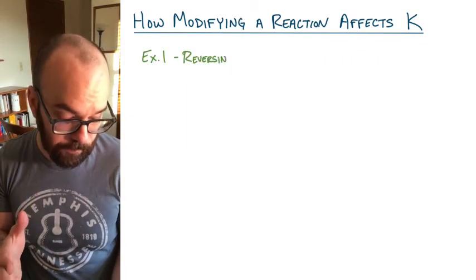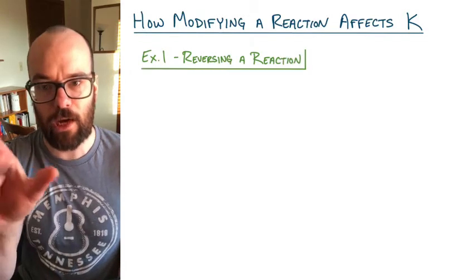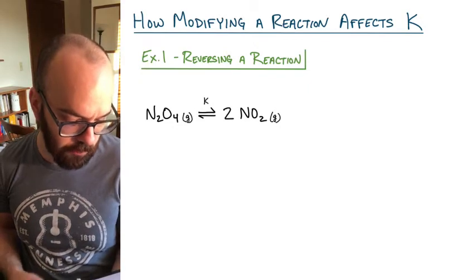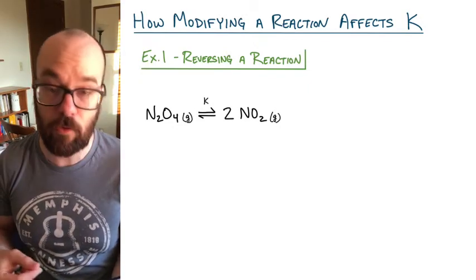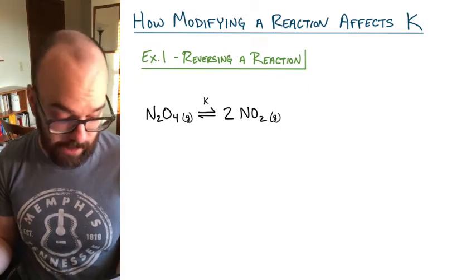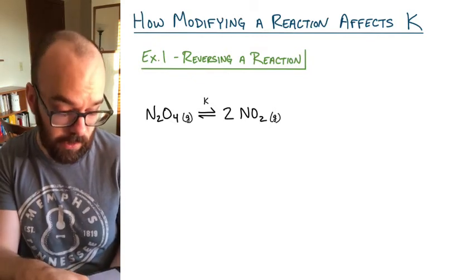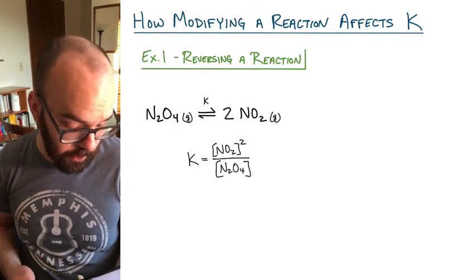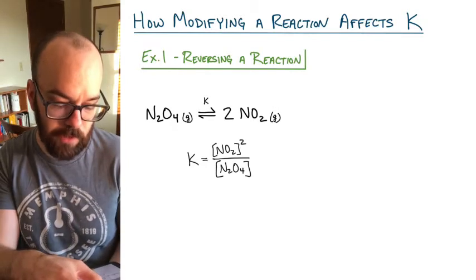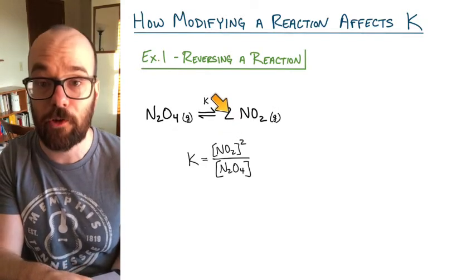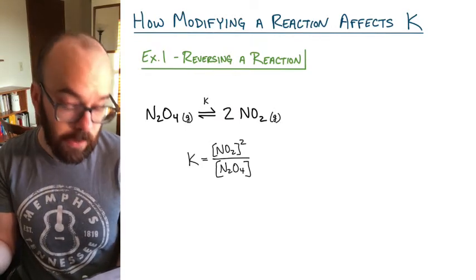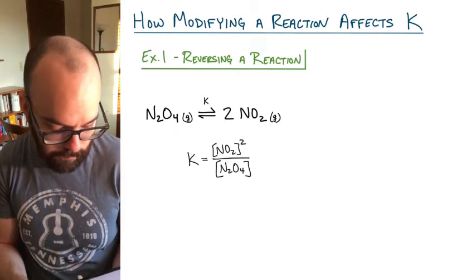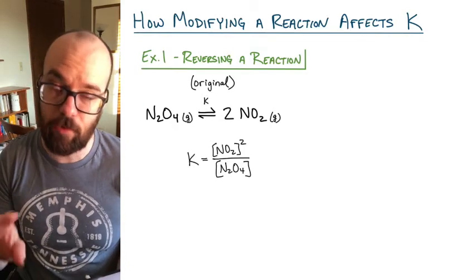Let's jump into our first example: what happens whenever we take a reaction and reverse it. Starting with dinitrogen tetroxide, N2O4 gas, in equilibrium with two nitrogen dioxide gases, with an associated K value. We can write that equilibrium expression as K equals NO2 concentration to the power of two divided by N2O4 concentration to the power of one. That's our original reaction before we reverse it.